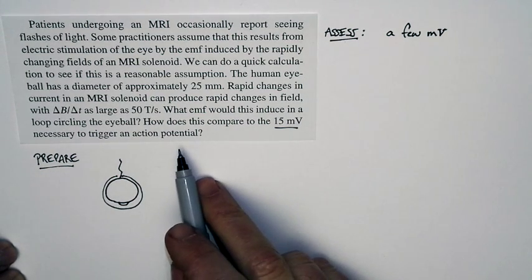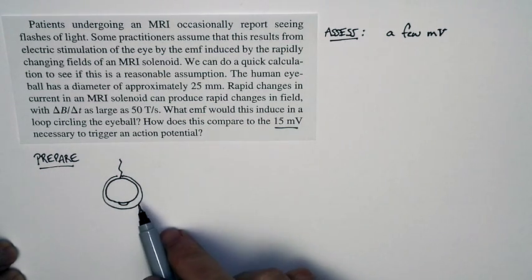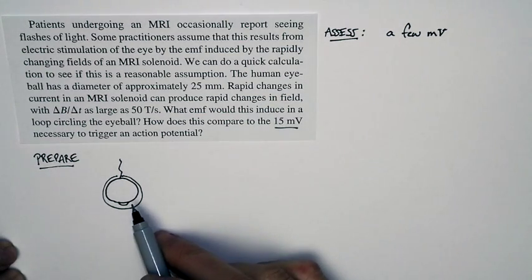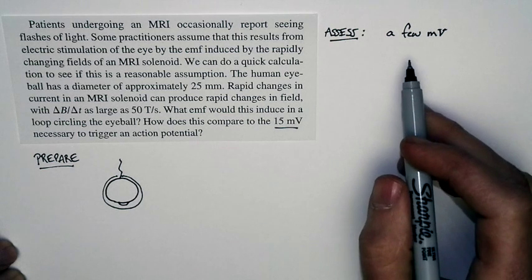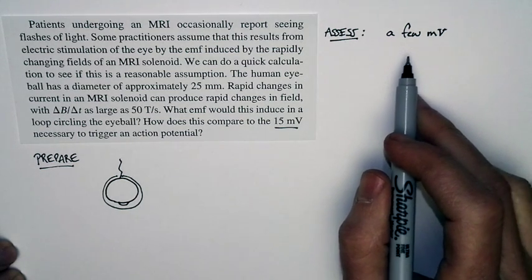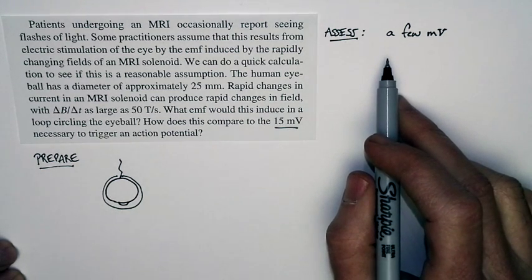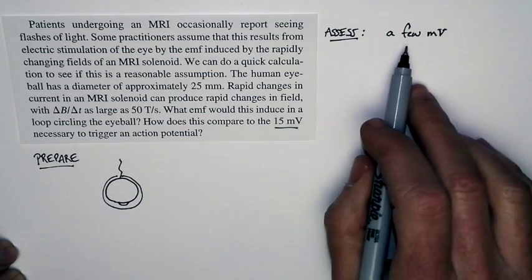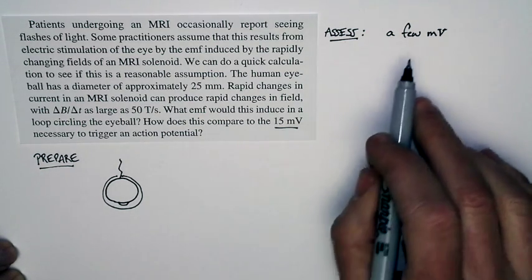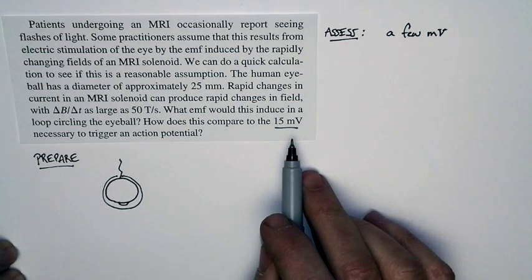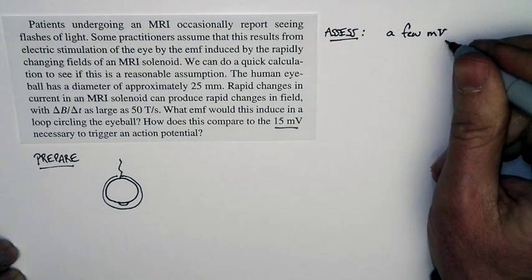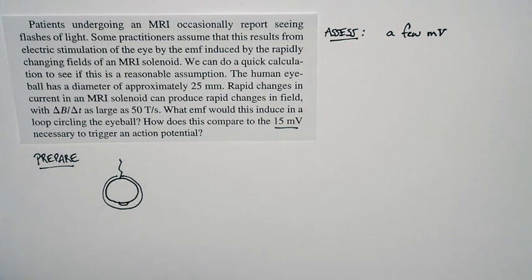It's 15 millivolts to trigger an action potential. If we get a result that was a couple of volts, everybody would be seeing flashes of light. That would be triggering action potentials like crazy. On the other hand, if it was a few microvolts, nobody would see a flash of light. So I'm expecting it to be less than the amount necessary to trigger an action potential. But for particularly sensitive individuals or something else that's going on, we might be able to see some sort of an effect.